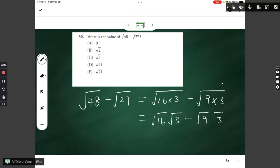And square root of 16 is just 4, so you have 4 square root of 3 minus, and square root of 9 is 3.